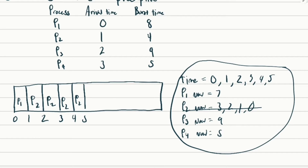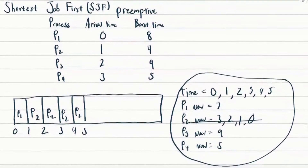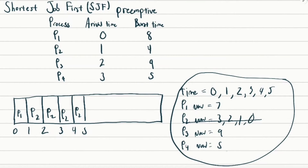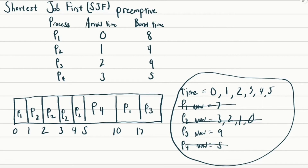Since there are no more processes arriving, we proceed with shortest job first. P4 has burst time 5, so we write P4 next — it finishes at time 10. Then P1 with burst time 7 goes next, finishing at time 17. Finally P3, the last one, has burst time 9, so 17 plus 9 equals 26.